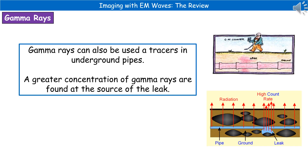It's worth remembering that gamma rays as tracers aren't just used in medicine — they can also be used for underground pipework. If we have a gamma source within a pipe, rather than digging up the entire pipeline to find a leak — which is especially inconvenient under roads — we can use a Geiger counter on the surface to detect where the count rate increases. Where the leak is, there will be an accumulation of the gamma source giving a much higher count rate, which then drops dramatically beyond it, narrowing down exactly where we need to dig.